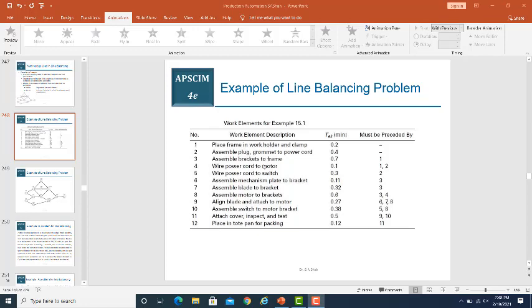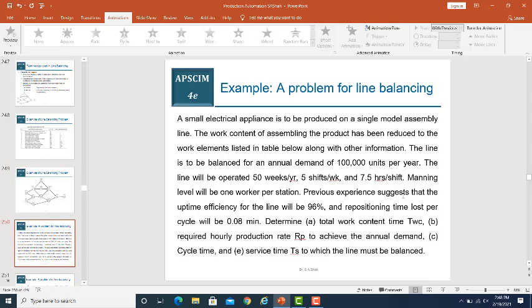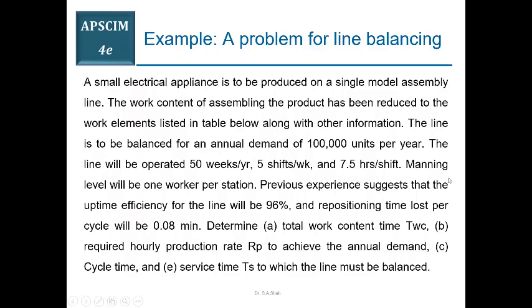From this table you will generate the precedence diagram, which shows the graphical representation of all work elements — meaning those operations — and the sequence in which those operations must be performed. The problem statement comes with that particular table which gives you the necessary data, including annual demand and available time. So let me start the presentation and read out the problem statement first.